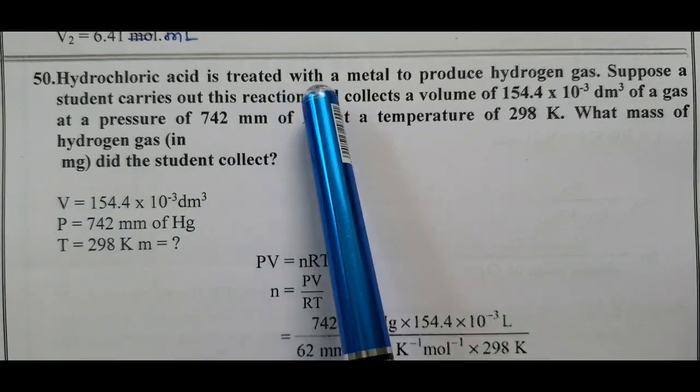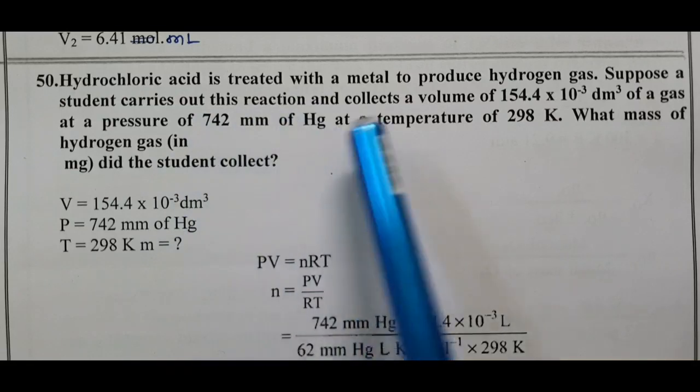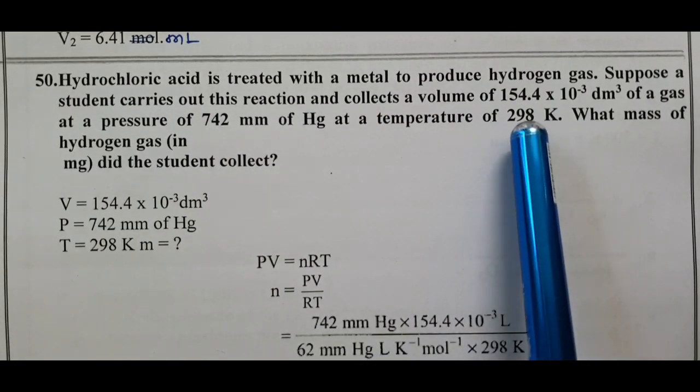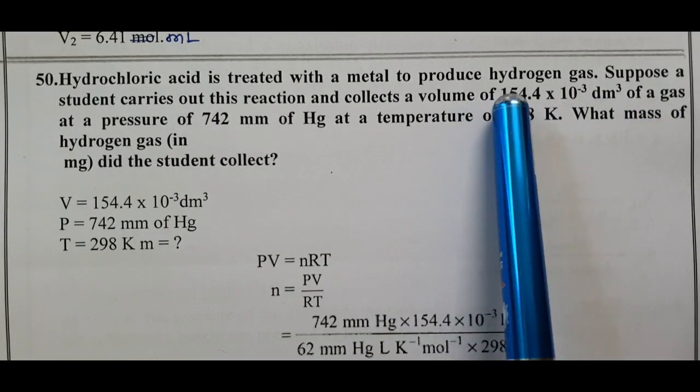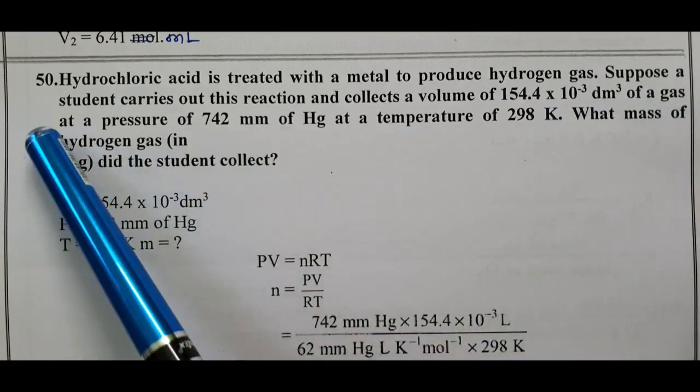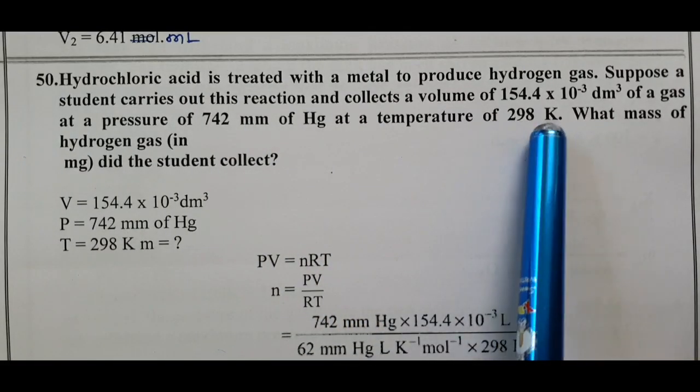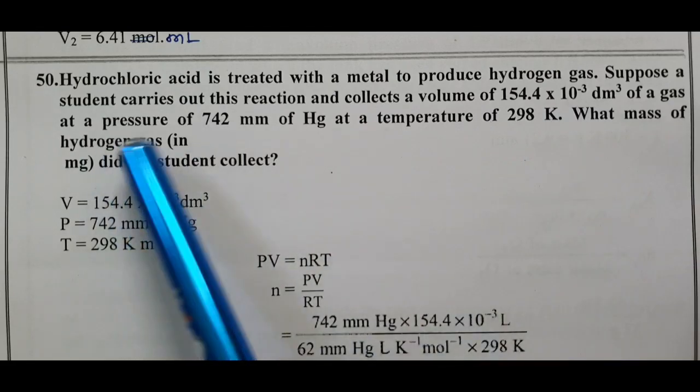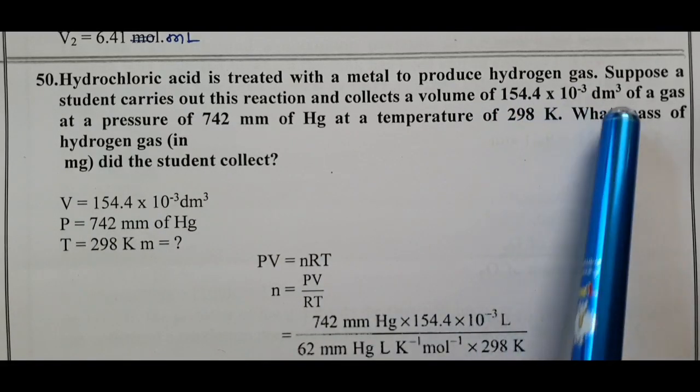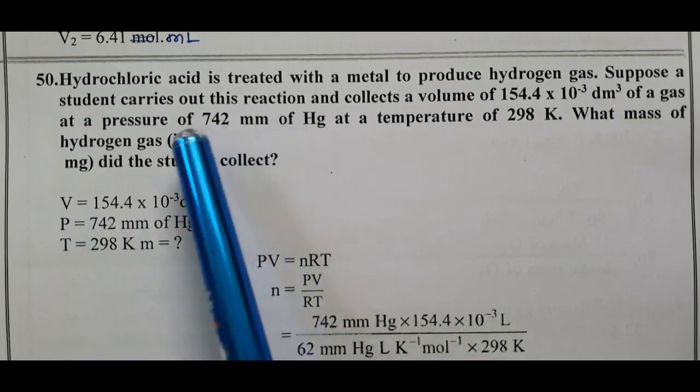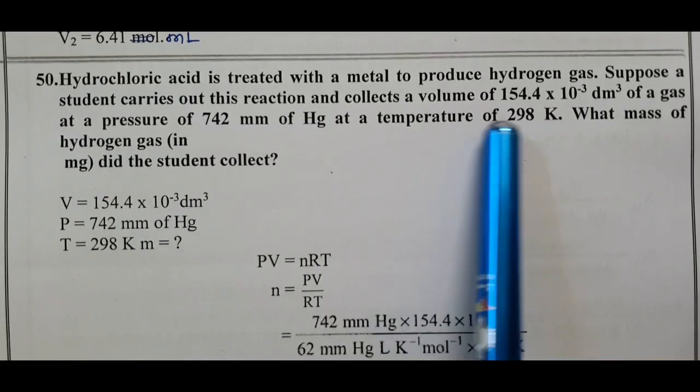Hydrochloric acid is treated with a metal to produce hydrogen gas. Suppose a student carries out this reaction and collects a volume of 154.4 into 10 power minus 3 decimeter cube, which is 0.1544 decimeter cube of gas at a pressure of 742 millimeter of mercury at a temperature of 298 Kelvin. What mass of the hydrogen gas in milligram did the student collect?